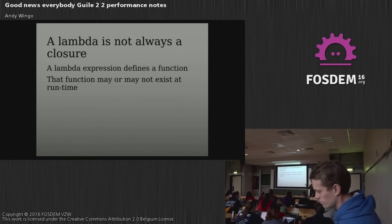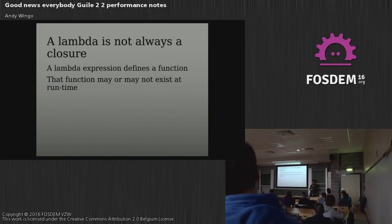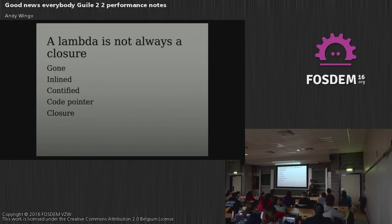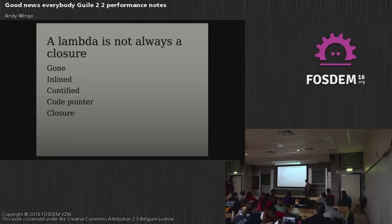Lambda — that's our tribe, right? Sometimes we think of lambda expressions, which define functions. It's just a function expression, and that's what it does. But that function doesn't necessarily exist at runtime. We need to look at how a lambda can be represented at runtime — is it always a closure? A closure is just one of five things a lambda can be. It can be completely gone, completely inlined, quantified, represented as a code pointer, or it can be a closure.